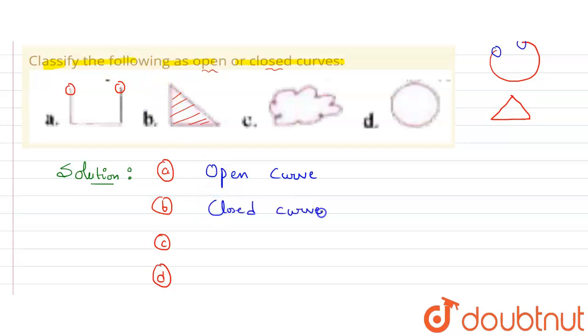Now come to part C. Here this is a cloud like structure and here all points are connected to each other, end to end connected, and there is not even a single endpoint. So this is also a closed curve.